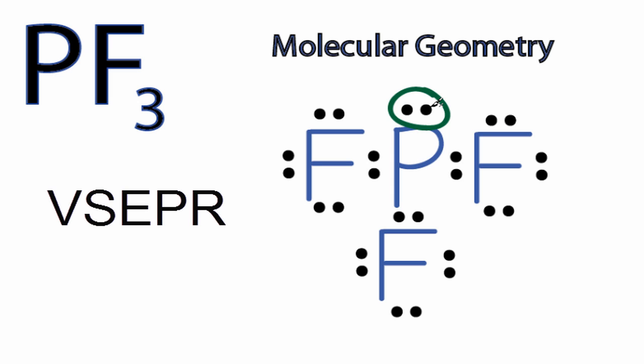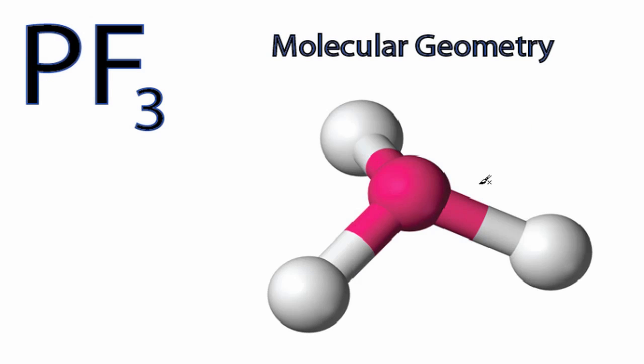In accordance with valence shell electron pair repulsion theory, all of those things are going to push away from each other, they're going to repel each other, and that's what's going to give PF3 its shape. If we tried to imagine that in three dimensions, it would look something like this. And remember, we have a lone pair of electrons on top, and that's contributing to this molecular geometry for PF3.